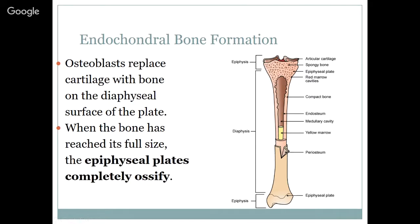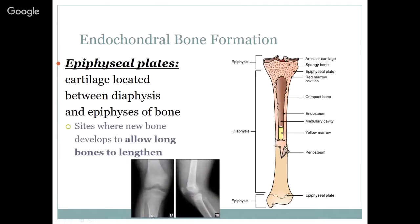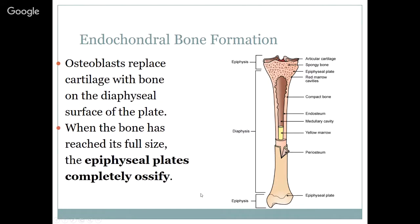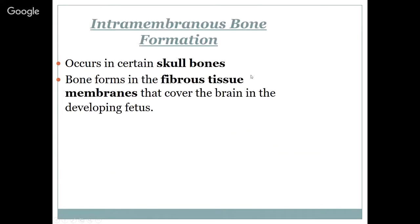In endochondral bone formation, osteoblasts are replacing cartilage with bone on the diaphyseal surface of the plate. When the bone has reached its full size, those epiphyseal plates completely ossify. We can actually tell the age of an animal — approximately in their six to eight month range — when they will completely ossify or close up these lucencies. Intramembranous bone formation occurs in certain skull bones or flat bones. The bone forms in the fibrous tissue membrane that covers the brain in the developing fetus — like the soft spot on a baby or the opening in the skull of some neonates — and that's called intramembranous bone formation.